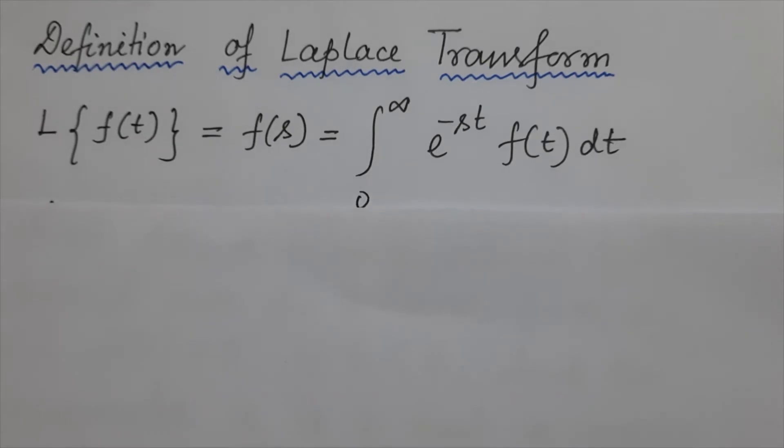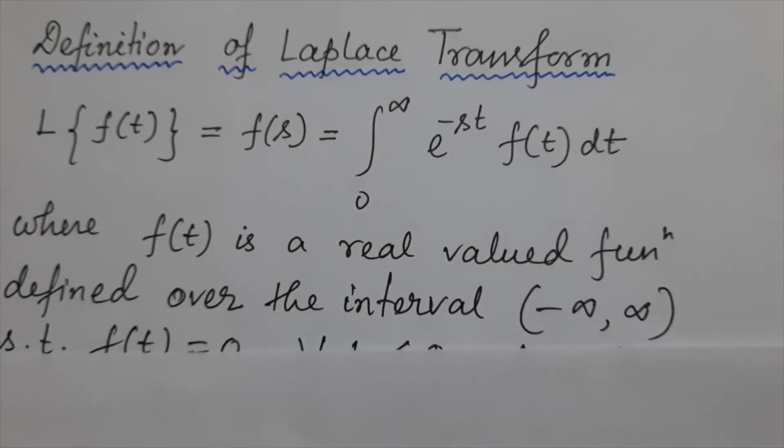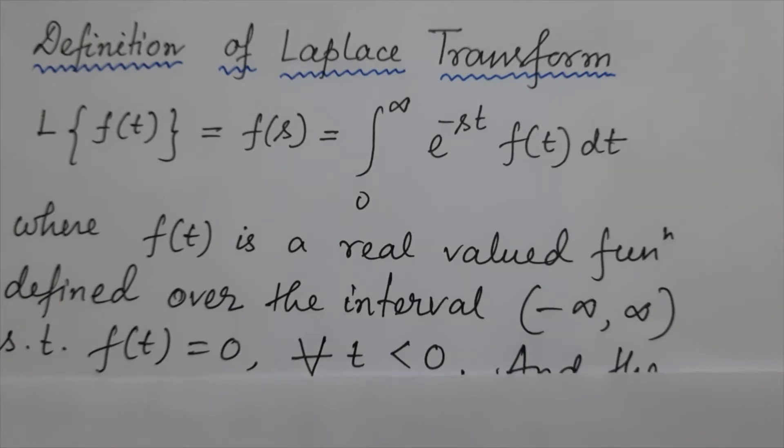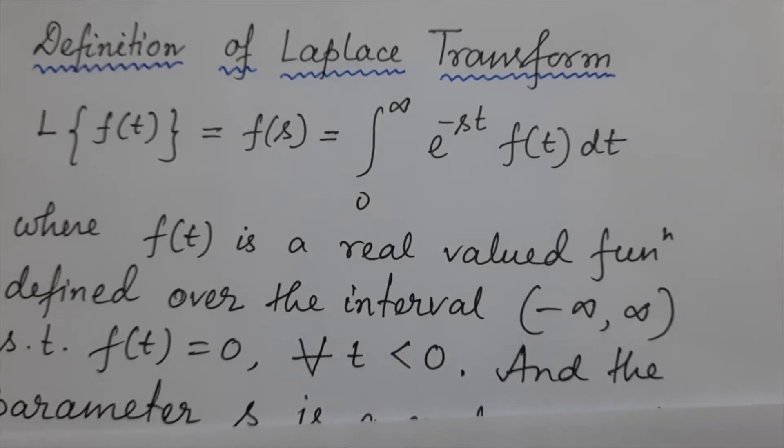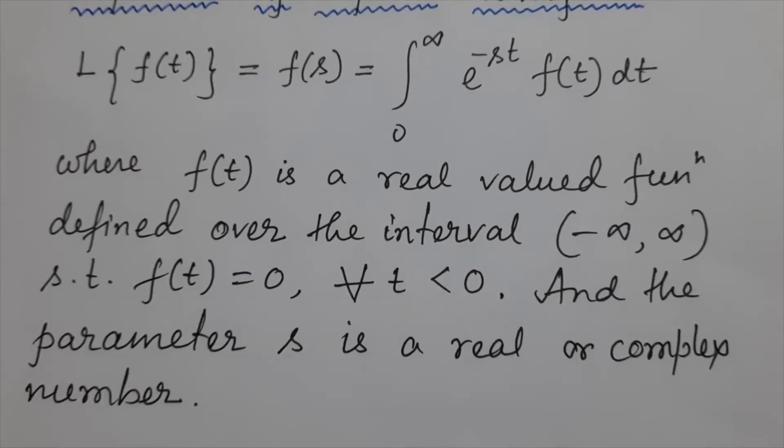Laplace transform of f(t) denoted as f(s) equals the integration from 0 to infinity of e to the power minus st times f(t) dt, where f(t) is a real valued function defined over the interval minus infinity to infinity such that f(t) equals 0 for all t less than 0. The parameter s is a real or complex number.